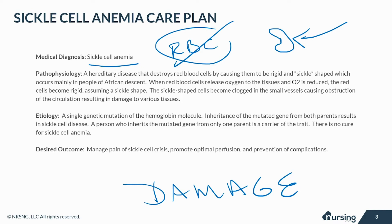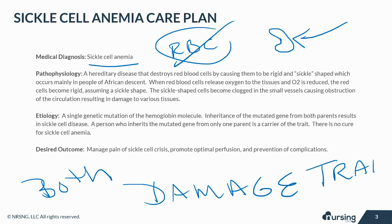Sickle cell is caused by a single genetic mutation of the hemoglobin molecule. Inheritance of the mutated gene from both parents results in sickle cell disease. A person who inherits the mutated gene from only one parent is a carrier of the trait.